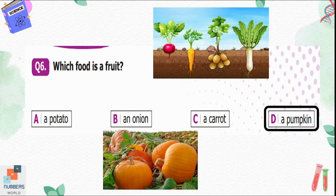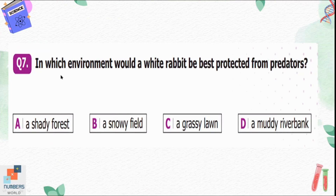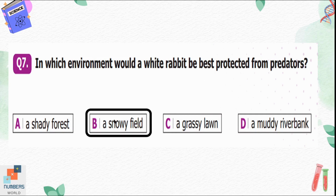Question number seven: in which environment would a white rabbit be best protected from predators? Option A, a shady forest; B, a snowy field; C, a grassy lawn; D, a muddy riverbank. The color of the rabbit and snow are both white, so option B is suitable — a white rabbit can easily camouflage in a snowy field and be protected from predators.